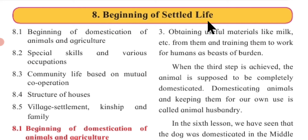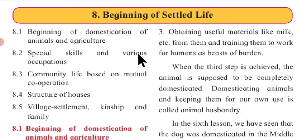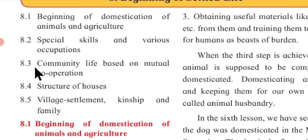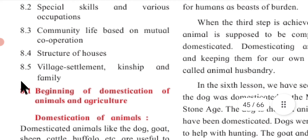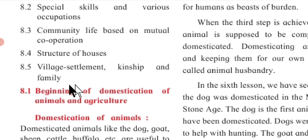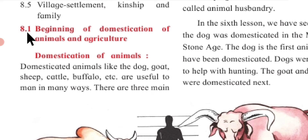Beginning of Settled Life. 8.1 Beginning of Domestication of Animals and Agriculture. 8.2 Special Skills and Various Occupations. 8.3 Community Life Based on Mutual Cooperation. 8.4 Structures of Houses. 8.5 Village Settlement, Kinship and Family.